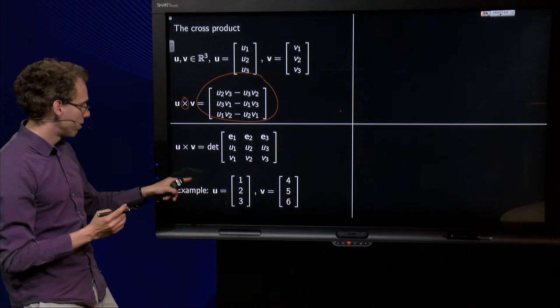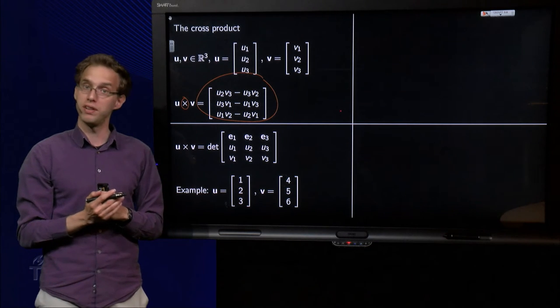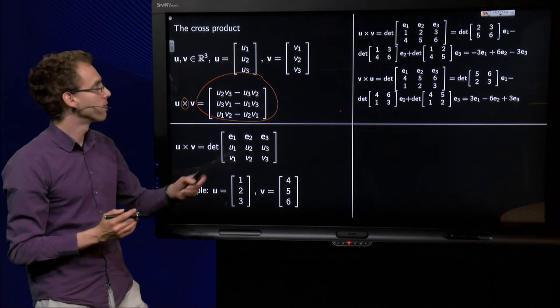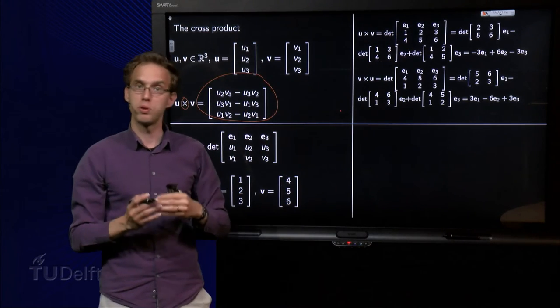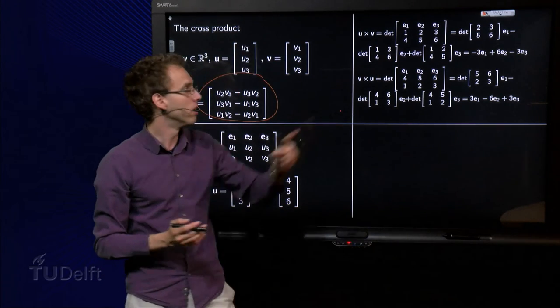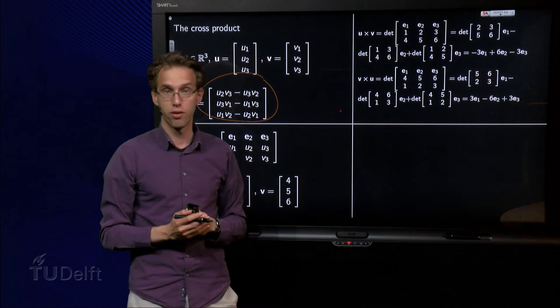Let's try a few examples. For example, u equals (1, 2, 3) and v equals (4, 5, 6). What do we get if we compute u cross v? We form the determinant, put e1 up to e3 in the first row, 1, 2, 3 in the second row, and 4, 5, 6 in the third row.